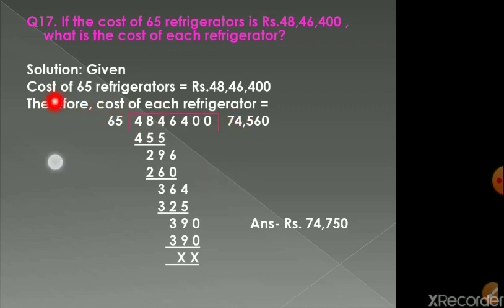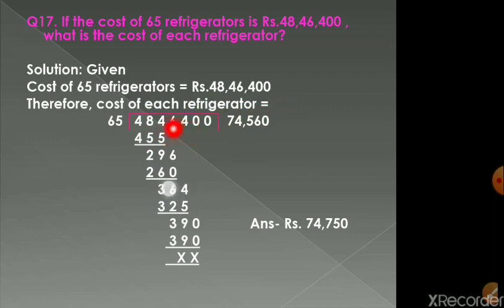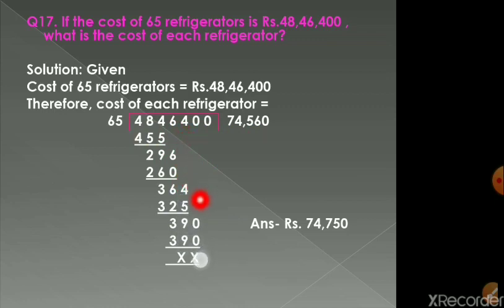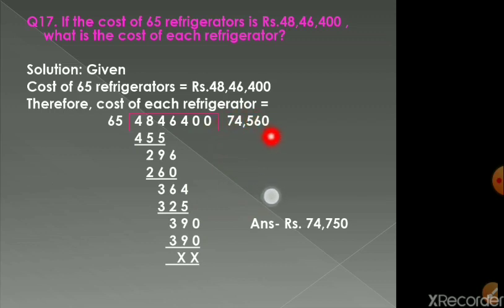Statement: cost of 65 refrigerators is rupees 48,46,400. Therefore, cost of each refrigerator equals 48,46,400 ÷ 65. Working through the long division: 65×7=455, remainder 29, bring down 6; 65×4=260, remainder 36, bring down 4; 65×5=325, remainder 39, bring down 0; 65×6=390, no remainder. The answer is rupees 74,750.